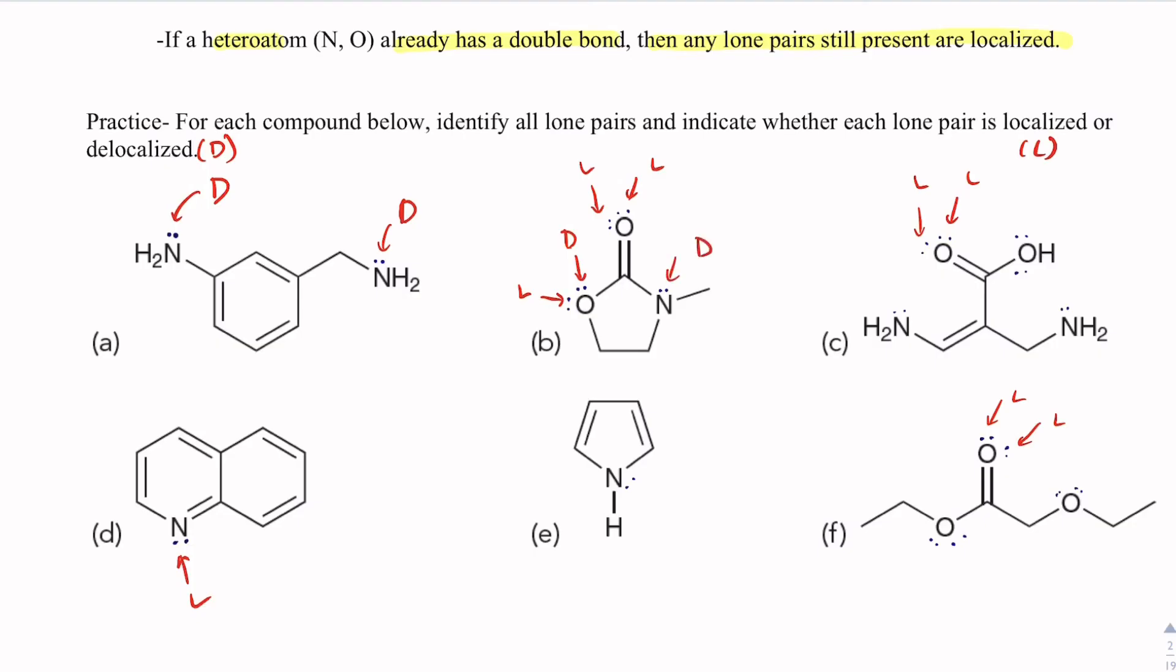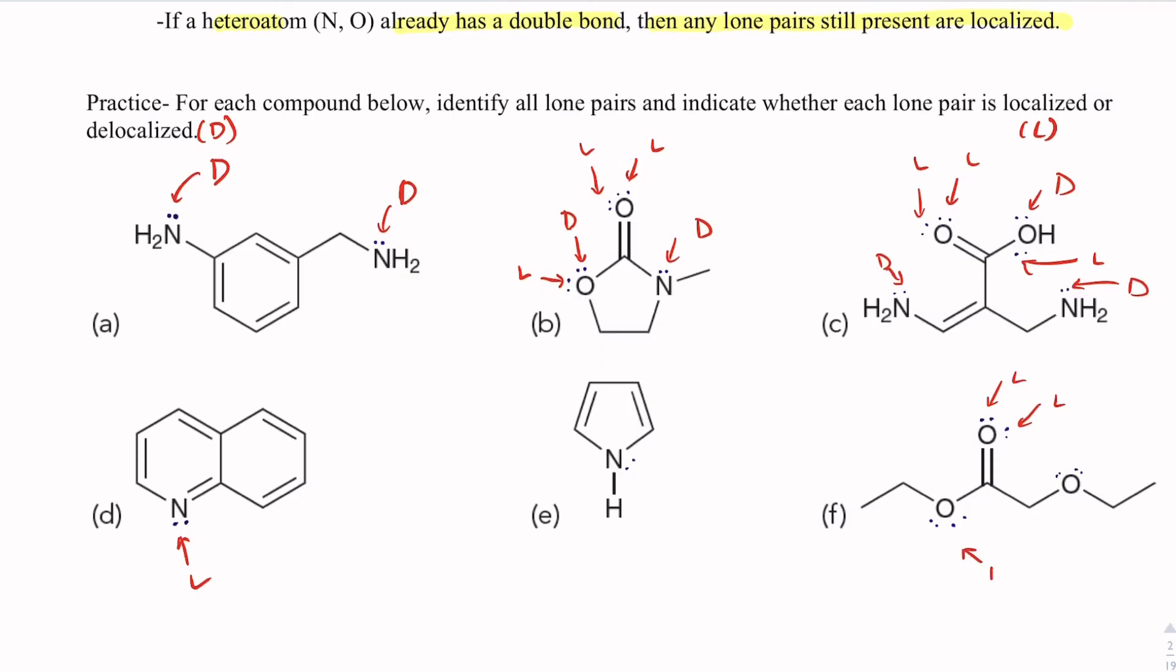This guy can be delocalized, delocalized, delocalized, but the second one has to be localized. It doesn't matter which one. When you have two, one is delocalized and one is localized. Delocalized, but localized. Delocalized, but localized. Delocalized, and then this one will be delocalized. So really, looking at whether or not there's a double bond present is going to be very helpful to you.